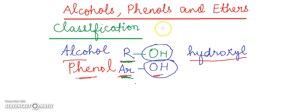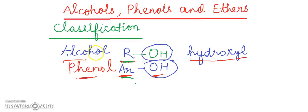Welcome to the class. Today we will learn about the classification of alcohols, phenols, and ethers. We already know from the previous class that alcohols and phenols are hydroxyl group containing compounds. The difference between alcohol and phenol is that alcohols are aliphatic derivatives and phenols are aromatic derivatives.